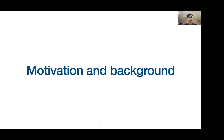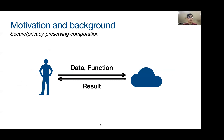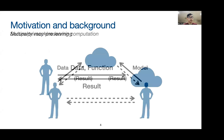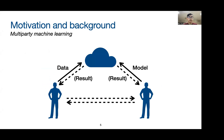For the motivation and background: our work is motivated by the need for secure or privacy-preserving computation in the cloud. Typically, a client will have some data that they want to evaluate a function on, which are both sent to some third-party server. The server carries out the computation and returns the result to the client. With homomorphic encryption, the data and the function are encrypted, preventing the server from seeing them. Similarly, in a multi-party machine learning problem setting, the data and the model can be owned by different parties, and with homomorphic encryption, only the owners have access to their respective data or model. The server sees neither the data nor the model.